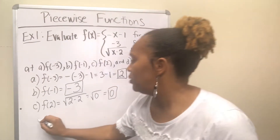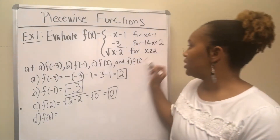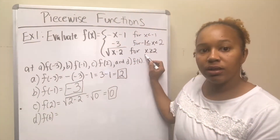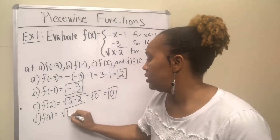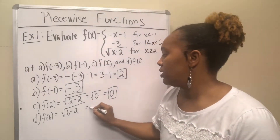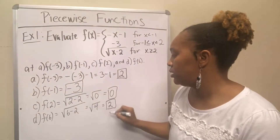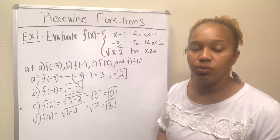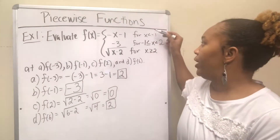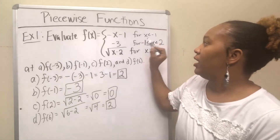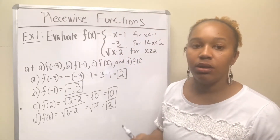For part D, f(6): 6 also fits in the third piece because 6 is bigger than 2. So wherever there is an x, replace it with 6. You get 6 minus 2, which is 4, and the square root of 4 is 2, so f(6) equals 2. That is how you evaluate piecewise functions — you figure out where the x value fits, and depending on where it fits, that determines which function you plug the number into.